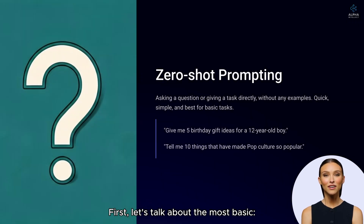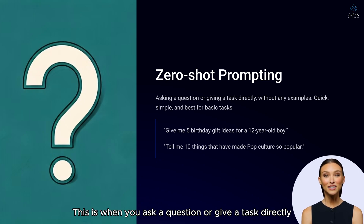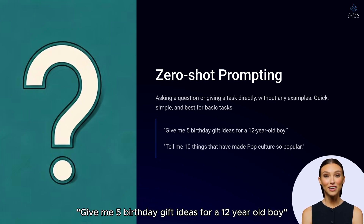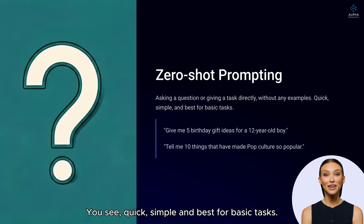First, let's talk about the most basic: zero-shot prompting. This is when you ask a question or give a task directly, without any example. Such as, 'Give me five birthday gift ideas for a 12-year-old boy,' or 'Tell me ten things that have made pop culture so popular.' Quick, simple, and best for basic tasks.